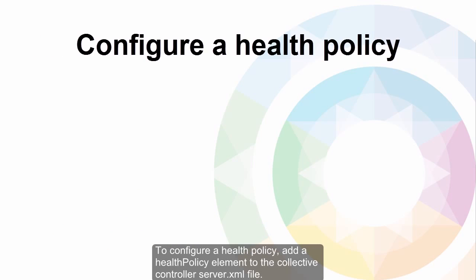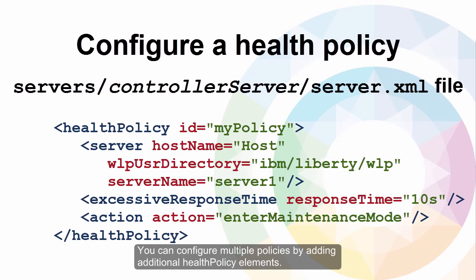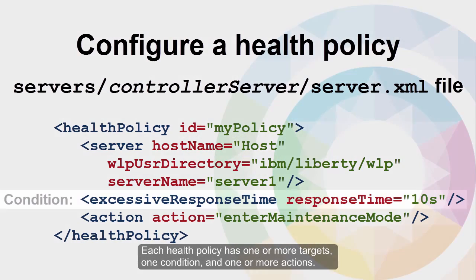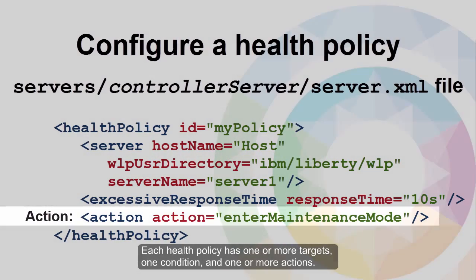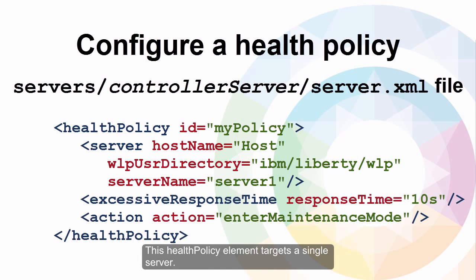To configure a health policy, add a health policy element to the collective controller server.xml file. You can configure multiple policies by adding additional health policy elements. Each health policy has one or more targets, one condition, and one or more actions. The target can be a cluster, a host, or a server. This health policy element targets a single server.